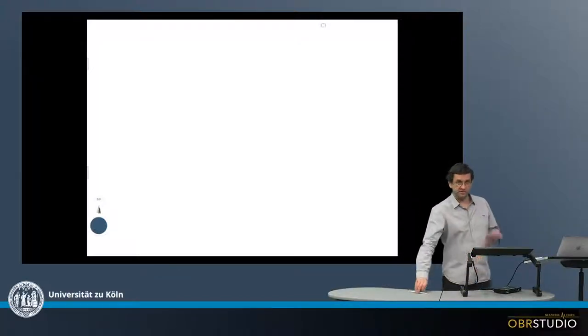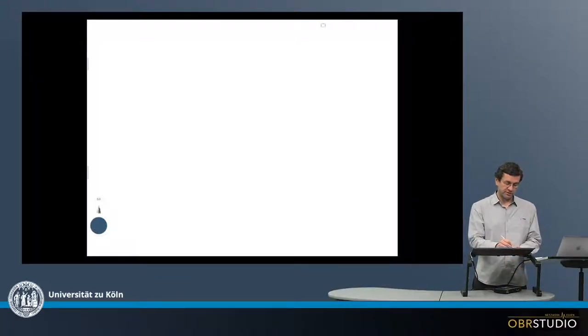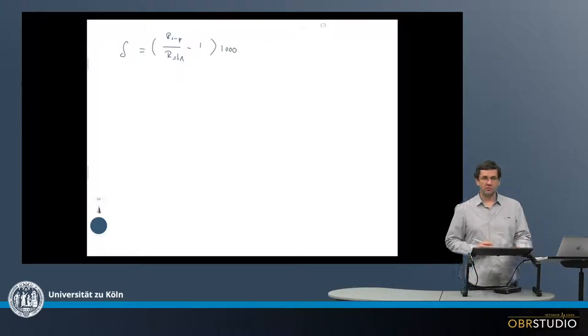The typical isotope notation, a delta epsilon notation, looks something like this. Delta is the isotope ratio in a sample divided by the isotope ratio in a standard, minus one, and then times 1000.